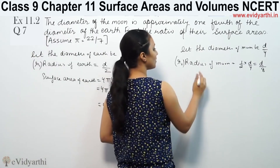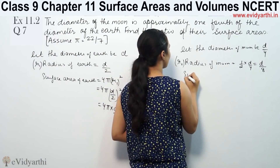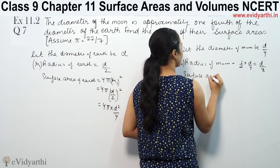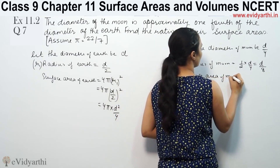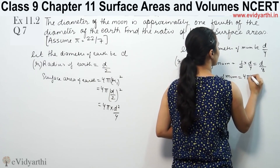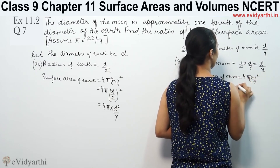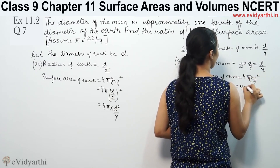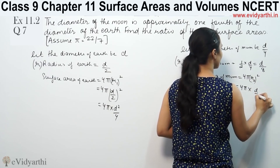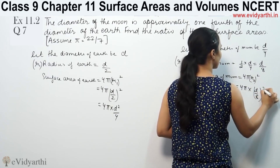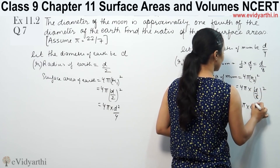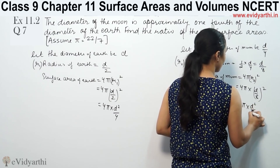For the surface area of moon, we use r2 = D by 8. So the surface area of moon is 4π r2 squared, which equals 4π into D by 8 squared, giving 4π into D squared by 64.